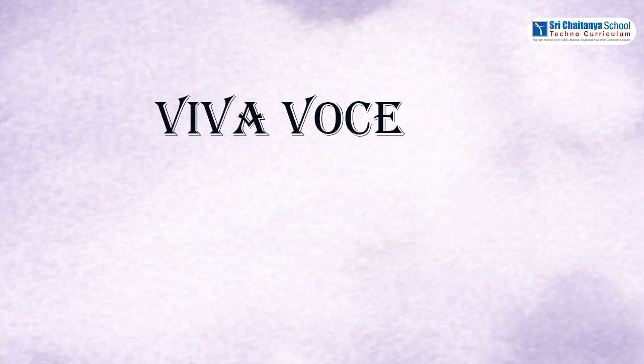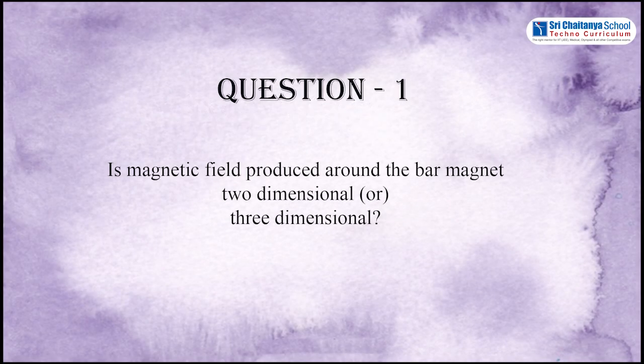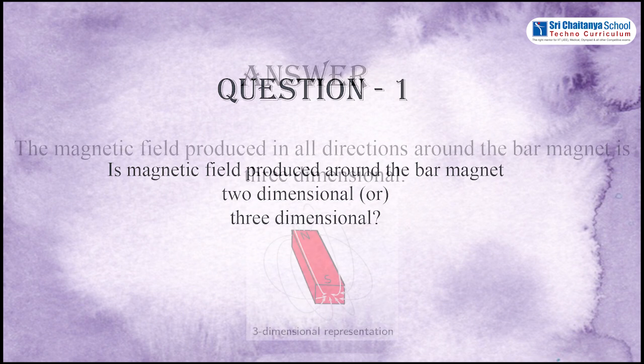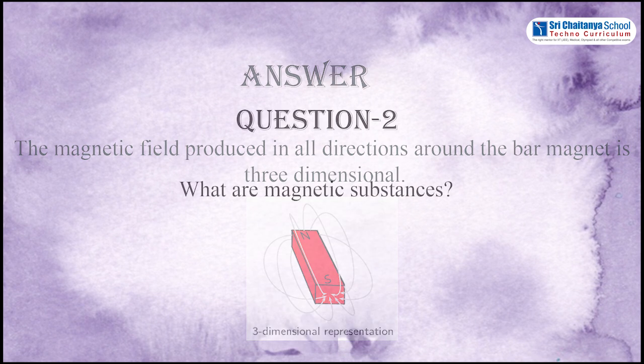Dear students, let me ask a few questions based on the above experiment. Question number 1: Is magnetic field produced around the bar magnet two-dimensional or three-dimensional? Answer: The magnetic field produced in all directions around the bar magnet is three-dimensional.